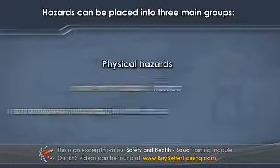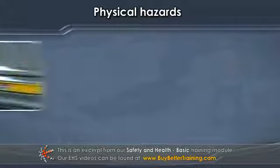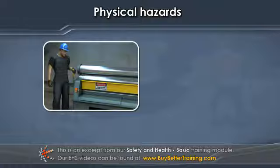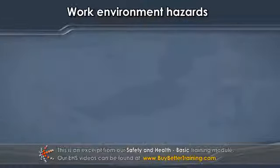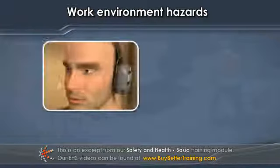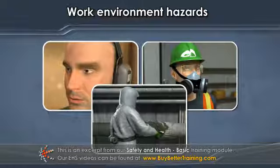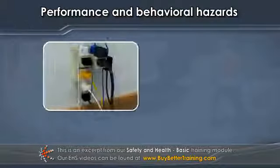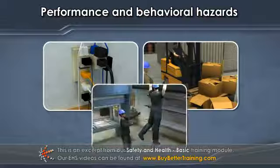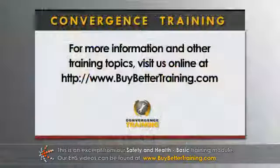Hazards can be placed into at least three main groups. Physical hazards, related to working around dangerous moving machine parts, mobile equipment, and energy sources. Work environment hazards, associated with noise, air quality, toxic materials, or other job-related conditions. And performance and behavioral hazards, resulting from a lack of hazard awareness, inexperience, carelessness, and or insufficient training.